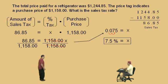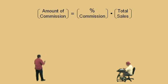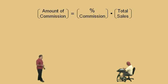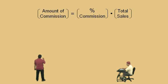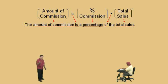That was a good one. Now let's do another one, Charlie. In this problem we're going to do the amount of commission — very similar to sales tax. The amount of commission is equal to the percent commission times the total sales. The amount of commission is a percentage of the total sales, so keep that in mind.